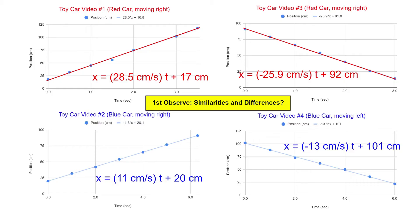At this point, each of your lab groups have taken data, collected it, and you've come up with words to describe the motion of your car, graphs, linear equations, and then some other kind of representation. When we conclude labs we typically get together as a class to look at all the results and see if we can reach consensus about what it all means. This year is going to be a little bit different because we can't do that face to face, so what I'm going to do in this video is model the kind of questions we're going to try to answer.